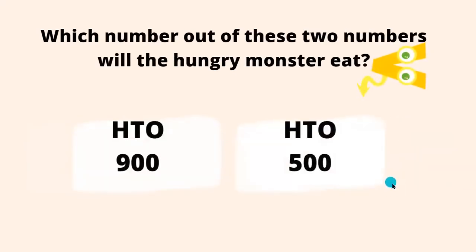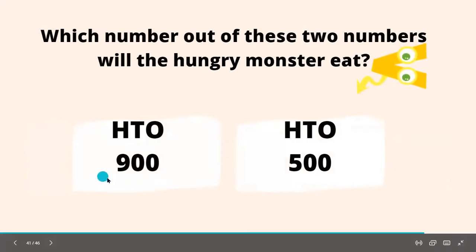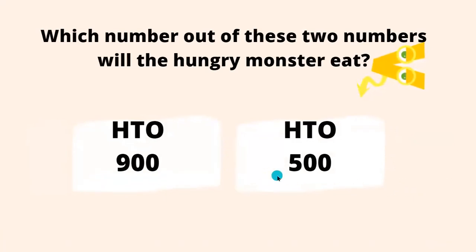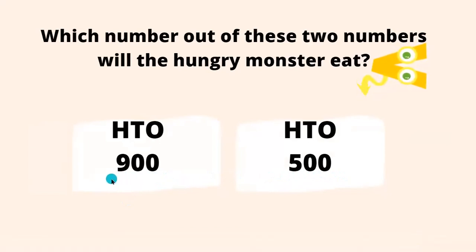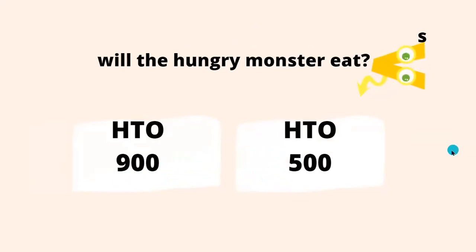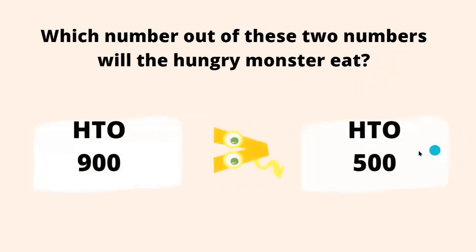Which number will the hungry monster eat now — 900 or 500? Let's compare these two numbers. First we look at the digit at the leftmost place, which is 9 and 5. Nine is greater than five, so that means the hungry monster is going to eat 900!